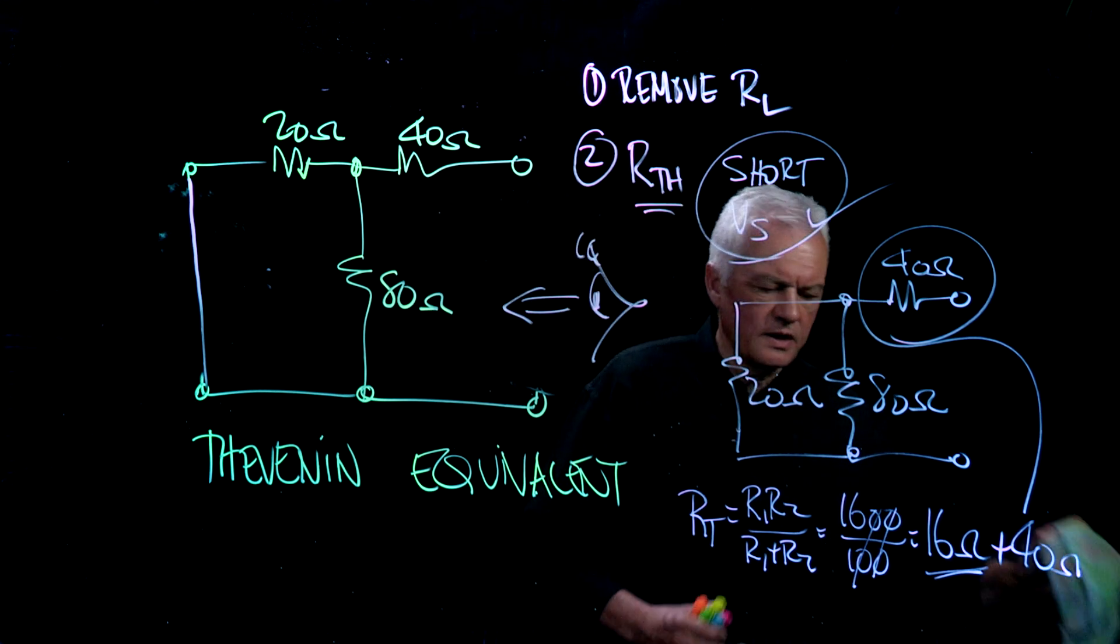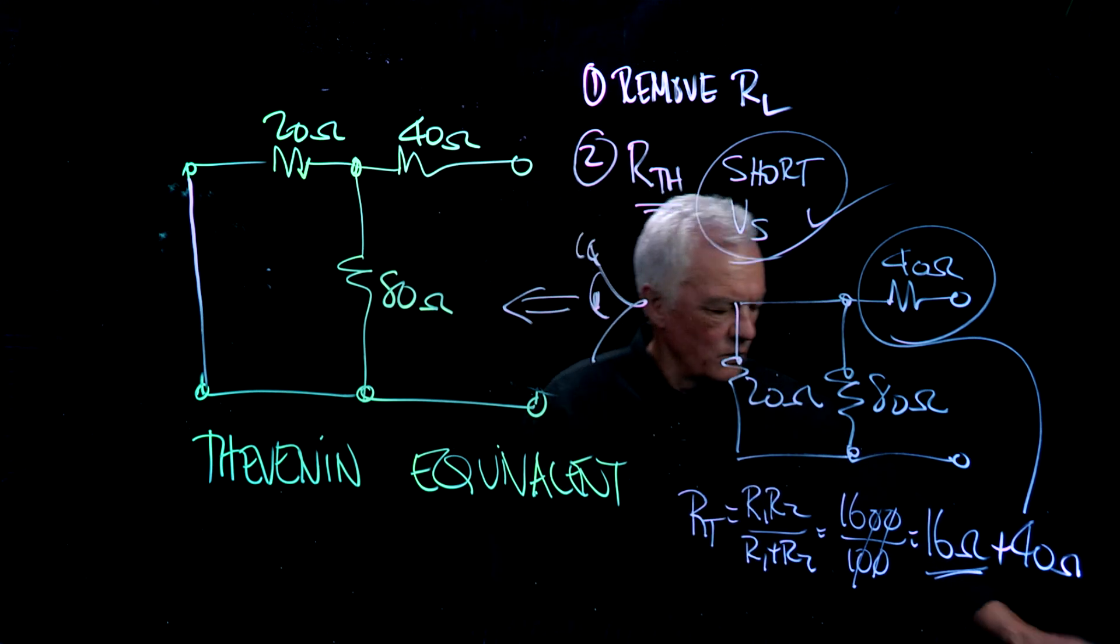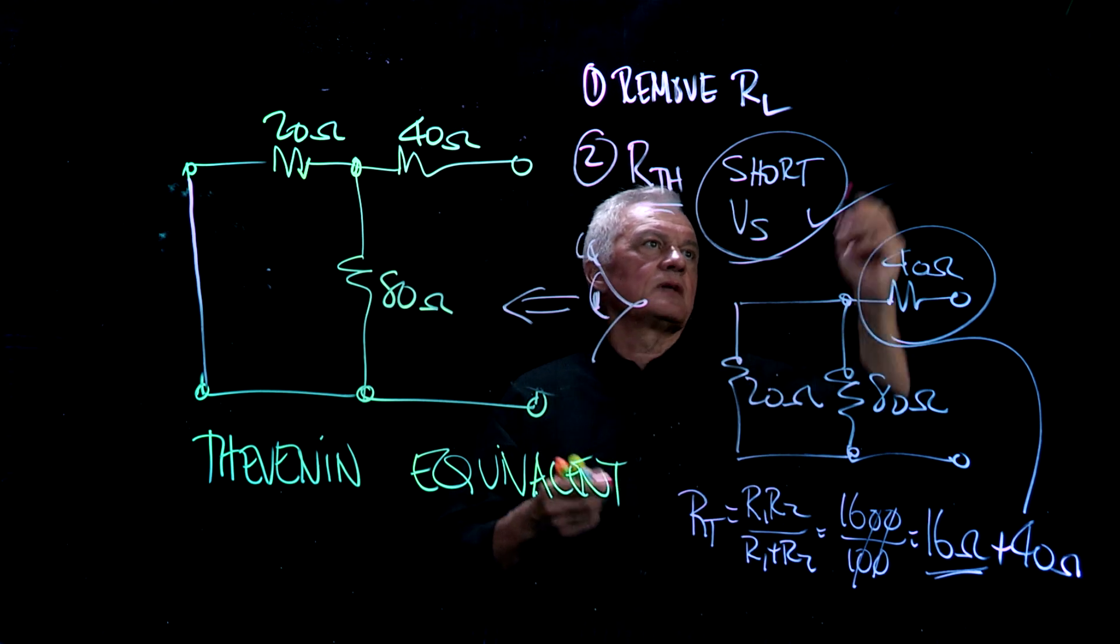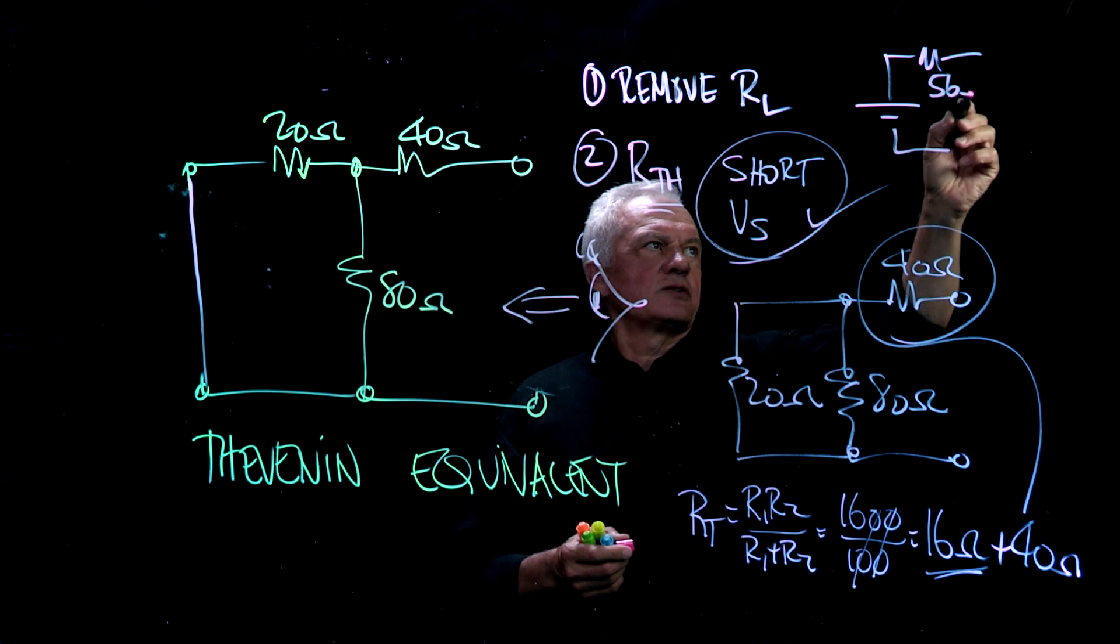So let's just start with our, I'm going to clean this and then start my Thevenin equivalent circuit because what it's going to look like is this. It's going to look like some voltage, some resistance, and right now we're at 56 ohms.